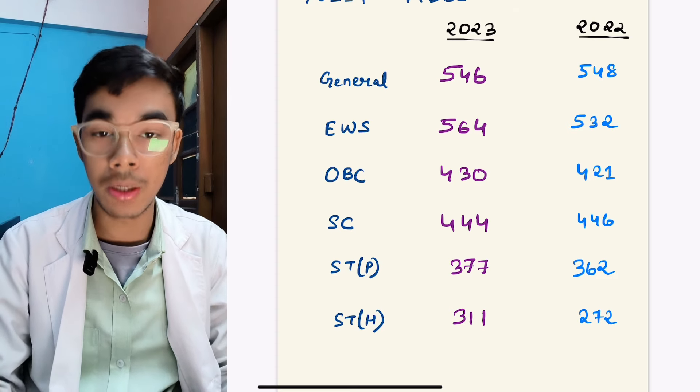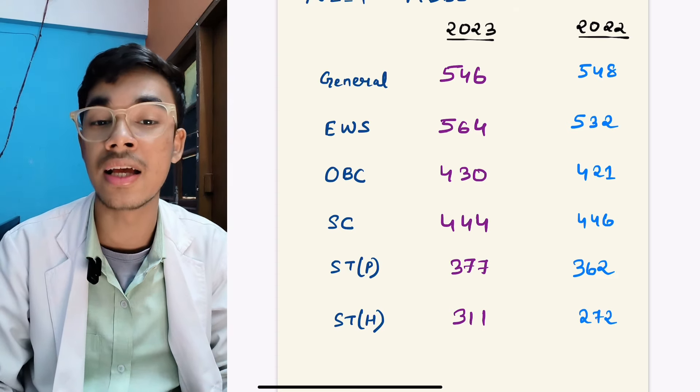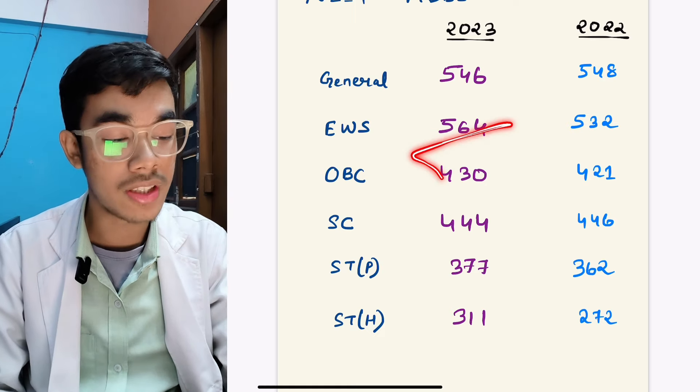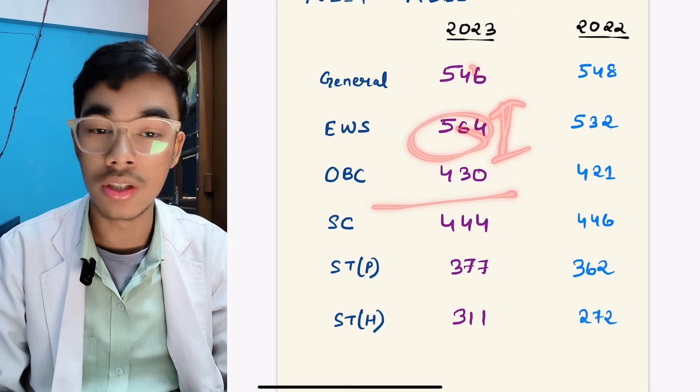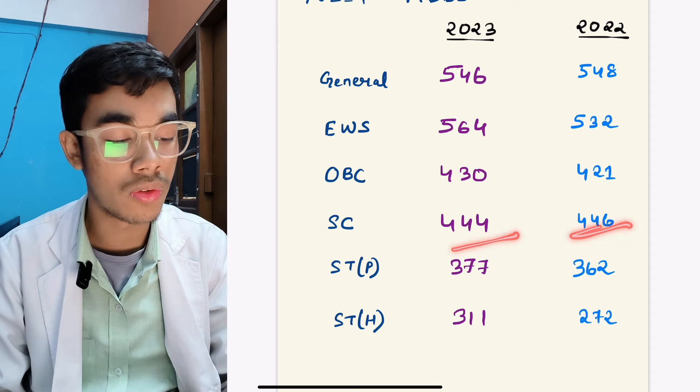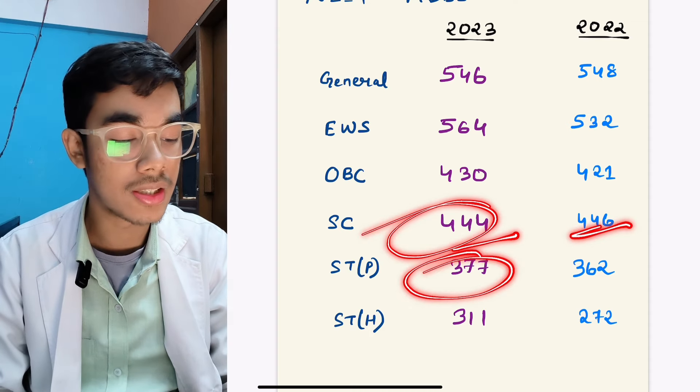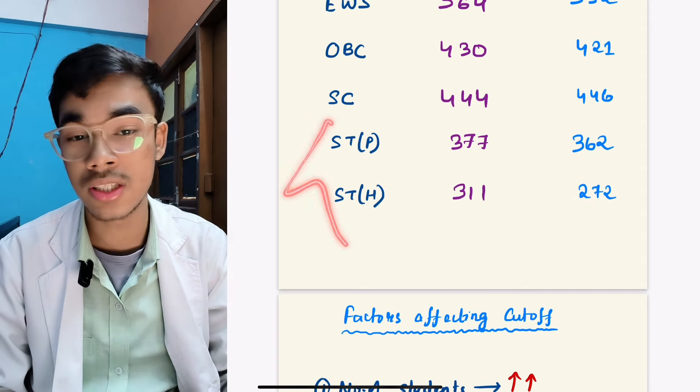The cutoff is 532 but this year 546. The previous year it was 564, just like that because the EWS was limited to only six medical colleges. The other colleges did not give EWS reservation. The previous year 564 was like a high cutoff, the highest.